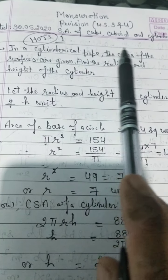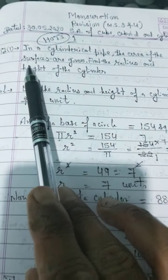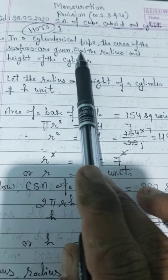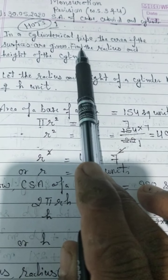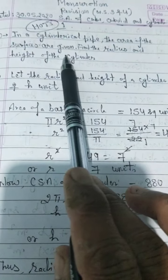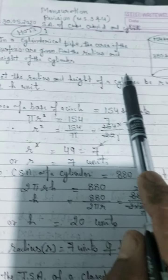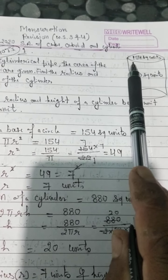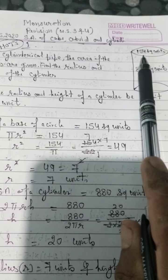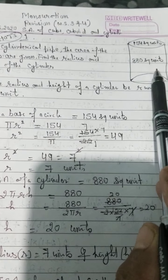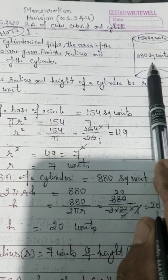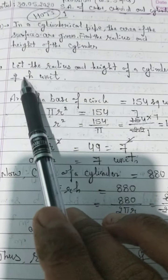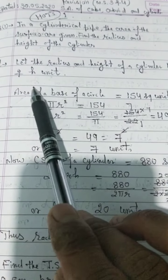I take the first question: in a cylindrical pipe, the surface areas are given — find the radius and height of the cylinder. The figure is given. Area of one base circle is 154 square units and curved surface area of the cylinder is 880 square units. Find its radius and height.